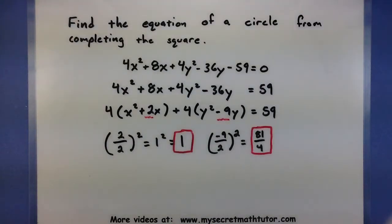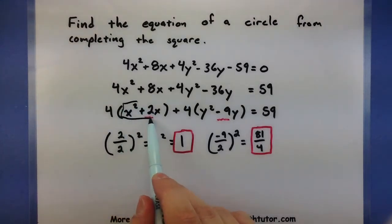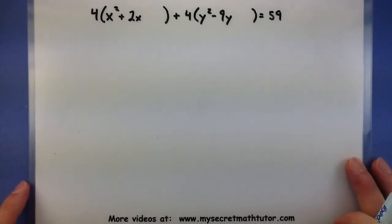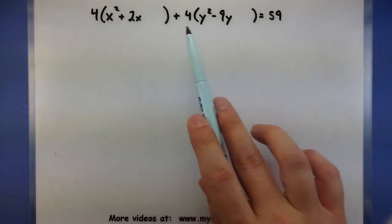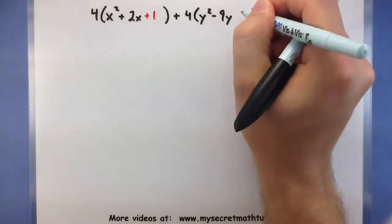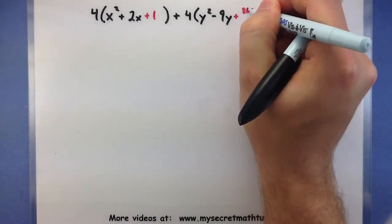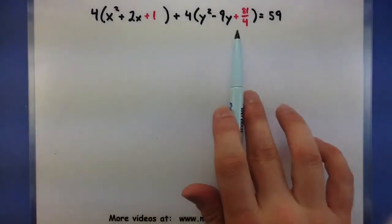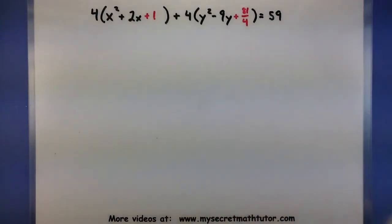With each of these numbers, we now need to add them to the x and the y parts. I suggest you rewrite the equation and leave extra room for these new numbers. Here's that same equation we just had, and notice I've written some extra space so I can put in the 1 and the 81 fourths. Let's put them in — there's going to be a plus 1 here and plus 81 fourths. Now, another important thing you have to be very careful of when completing the square is to balance out your equation.